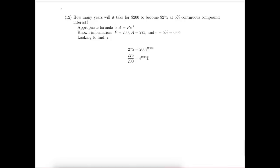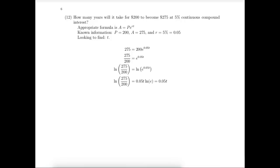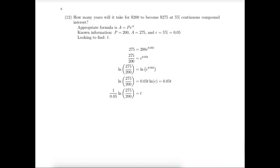We need to get T out of the exponent, so we'll take the natural log of both sides. That allows us to rewrite the right-hand side. You may remember that the natural log of E is 1, so the right-hand side of the equation is really 0.05T. Let's divide both sides by 0.05 to find T. That leaves us with a calculator problem. My calculator gives a result of approximately 6.3695, and because we're compounding continuously we'll leave the time as that decimal value.